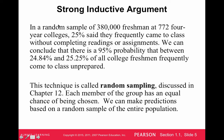They've got their sample — many, many examples — from 380,000 freshmen at 772 four-year colleges. They're coming up with this general statement that between 24.84% and 25.25% of all college freshmen — remember, that's all college freshmen, not just these 380,000 — frequently come to class unprepared. This may or may not be true, but it is a strong inductive argument because it used statistics and is drawn from many examples.